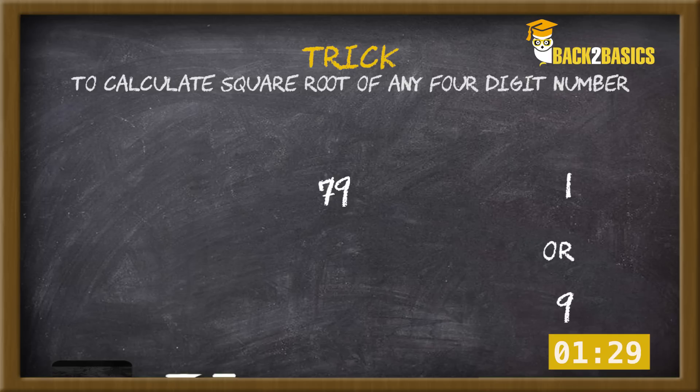Step 3: 79 lies between 8 square, that is 64, and 9 square, that is 81. We will consider the smaller number here, that is 8 square. So our final answer can either be 81 or 89.